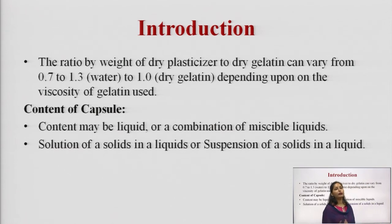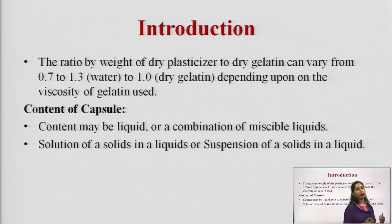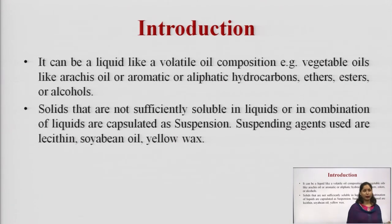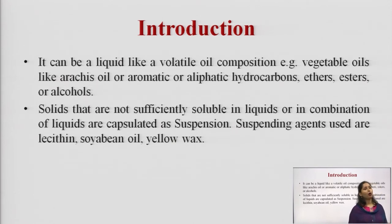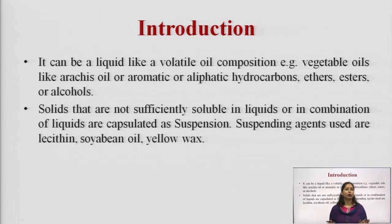Regarding the content of the capsules — what we fill in soft gelatin capsules: the content may be a liquid or a combination of miscible liquids. We can incorporate solutions of solids in a liquid or suspensions of solids in a liquid. It can also be a liquid-like volatile composition, for example vegetable oils like arachis oil, or aromatic or aliphatic hydrocarbons such as ethers, esters, or alcohols. Solids not sufficiently soluble in liquid are encapsulated in the form of a suspension, using suspending agents such as lecithin, soybean oil, and yellow wax.